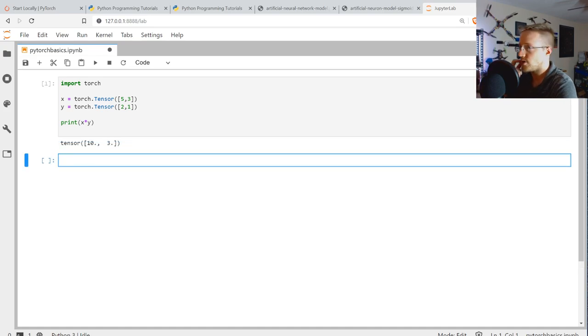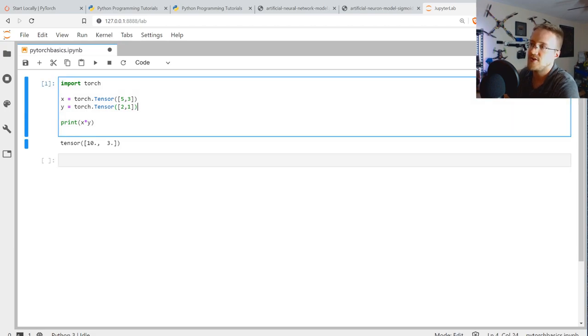And we can make this a 2 and a 1. We could then say print X times Y. It's going to take a second to import torch there, but normally that operation would be much faster. But yeah, we just multiplied these two arrays.